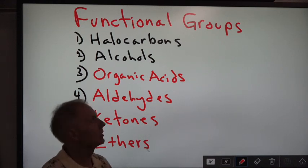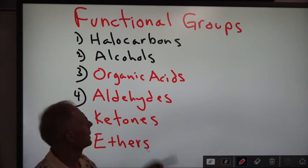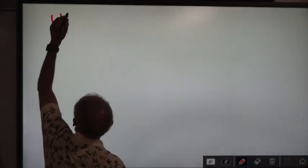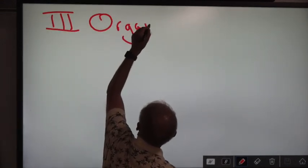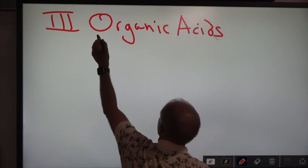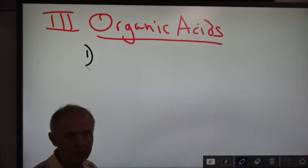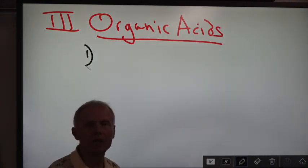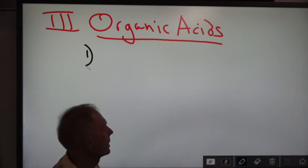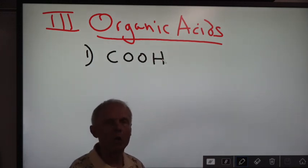Roman numeral one was halocarbons, Roman numeral two was alcohols, and now let's get into Roman numeral three: organic acids. The first thing about organic acids is what you put on the hydrocarbon chain — you put COOH on the hydrocarbon chain. We learned this a long time ago in acids and bases.